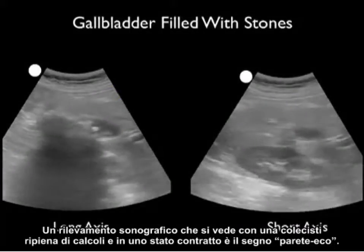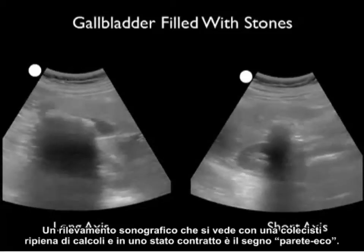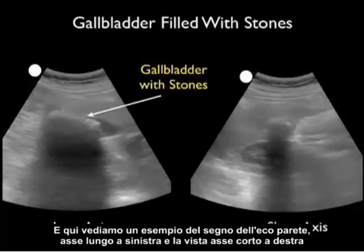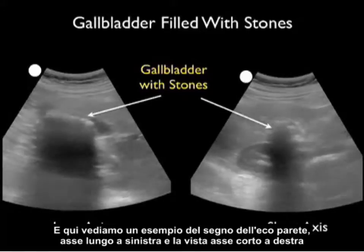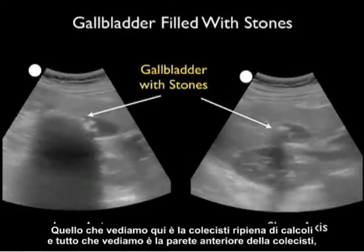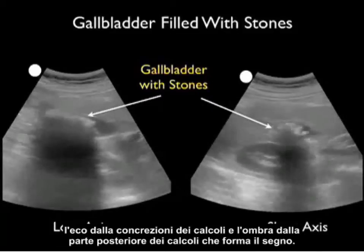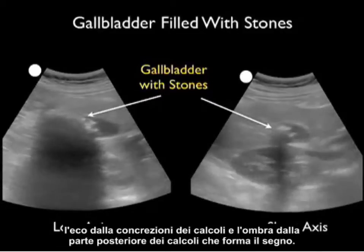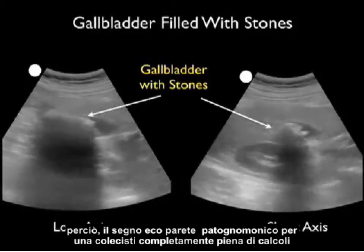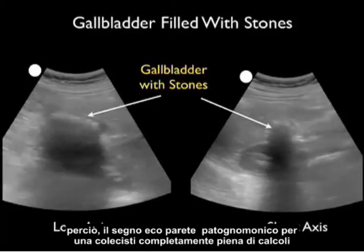A sonographic finding seen when a gallbladder is completely filled with stones in a contracted state is the wall echo sign. We see an example here in both long axis and short axis views. What we see is the anterior wall of the gallbladder, the echo from the concretion of stones, and the shadow off the back of the stones making the sign. The wall echo sign is pathognomonic for a gallbladder completely packed with stones in a contracted state, and it can be occasionally difficult to find the gallbladder when this is all you see.